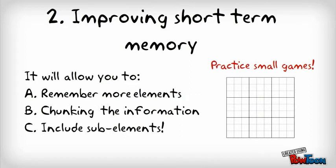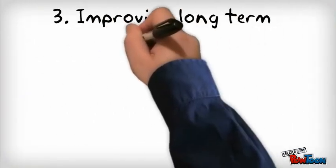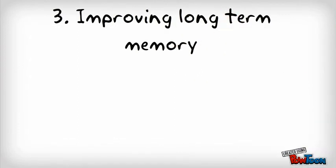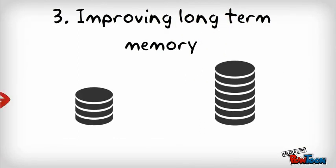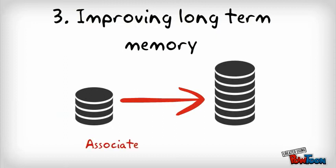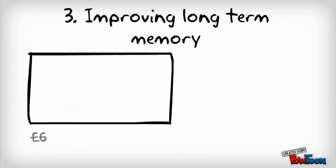Step 3: Improving your long-term memory. Additionally, you want to practice the ability to selectively assimilate what is in your short-term memory into your long-term memory. In order to incorporate an item into your long-term memory, you need to increase the depth of its processing by associating new meanings to it.